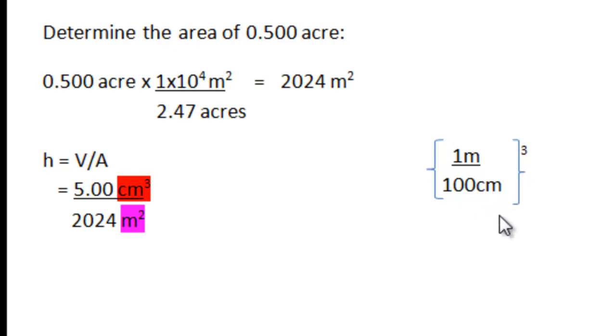But we have to cube the entire conversion factor, the linear conversion factor, to get to cubic meters and cubic centimeters. If that's the case, then this 100 centimeters becomes a million cubic centimeters.